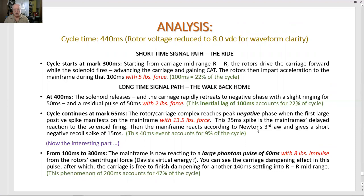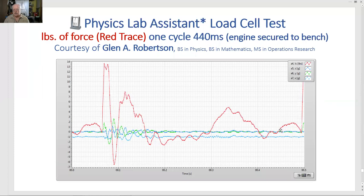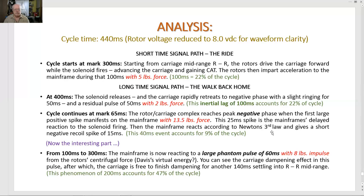Long time signal path. The walk back home. At 400 milliseconds, the solenoid releases and the carriage rapidly retreats to negative phase with a slight ringing of 50 milliseconds. And carriage releases, there's a ringing of the engine slight. And a residual pulse of 50 milliseconds with two pounds force. There's another pulse of two pounds.